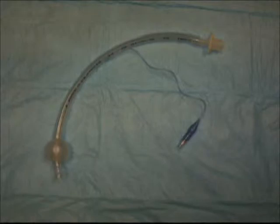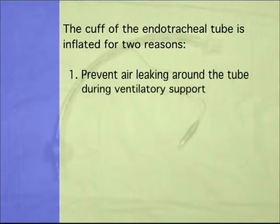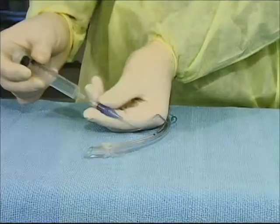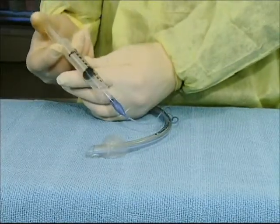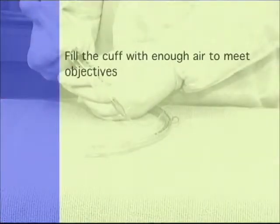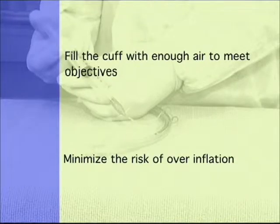Cuff management. The cuff of the endotracheal tube has three main components: the pilot balloon, the pilot line, and the cuff itself. The cuff is inflated for two reasons: to prevent air leaking around the tube during ventilatory support, and to prevent aspiration of oral secretions. When air is injected into the cuff via the pilot balloon, the cuff is inflated at the distal end of the endotracheal tube and the windpipe, sealing off the upper airway. The main goal of cuff inflation is to fill the cuff with enough air to accomplish these two objectives while simultaneously minimizing the risks associated with overinflation.